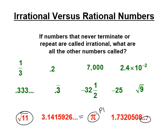Everything else is called rational — the opposite. Irrational means crazy; 'ir' means not, so it means the opposite of rational. So fractions, scientific notation, repeating decimals are rational. Negative numbers are rational. Square roots you know the answer to are rational.